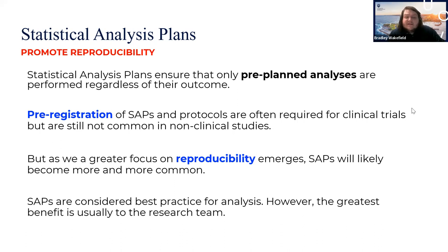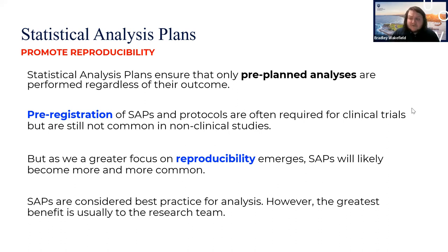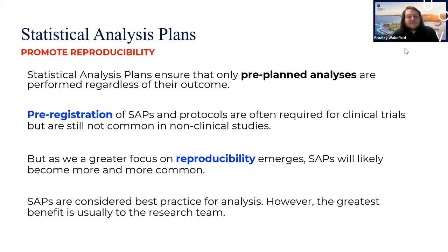Pre-registration of SAPs and protocols is often required for clinical trials, though not yet common for non-clinical studies. However, there is a growing push toward greater reproducibility and accountability, and it may become more regular for non-clinical studies to require pre-registration before publication. The Australian Clinical Trials Alliance recommends that every clinical trial have a statistical analysis plan or protocol. A SAP represents best practice for analysis, and in our community of practice we aim to foster and support best practice in quantitative analysis.